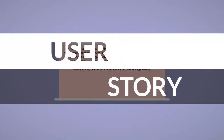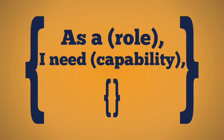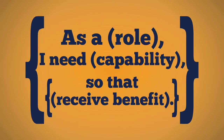A user story is an informal and brief description of needs that may be part of the product. It is usually written from the perspective of a potential user of the product regarding functionality or a feature. The user story may match the format: 'As a [role], I need [capability], so that [receive benefit].' Role defines who needs something, capability is the exact need, and receive benefit is a positive outcome for the requesting party.